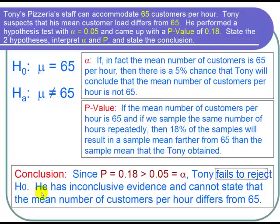And we say that Tony has inconclusive evidence, and he cannot state that the mean number of customers per hour differs from 65. He pretty much can't say anything except maybe try a larger sample size. And we're done with the problem.